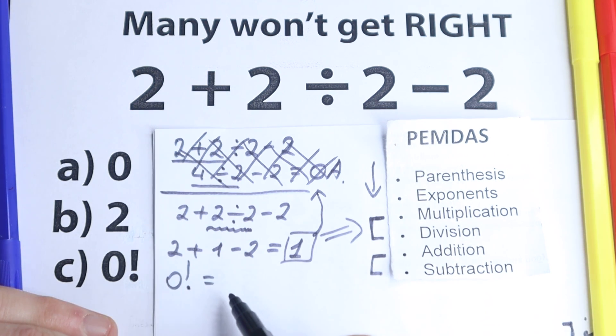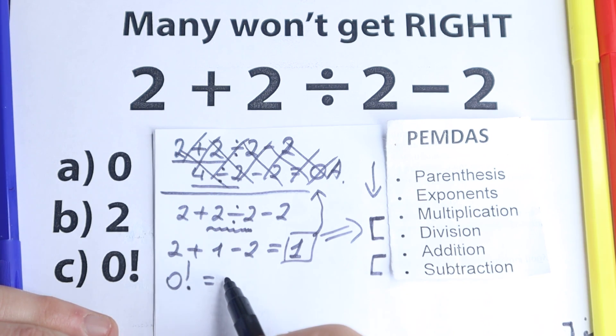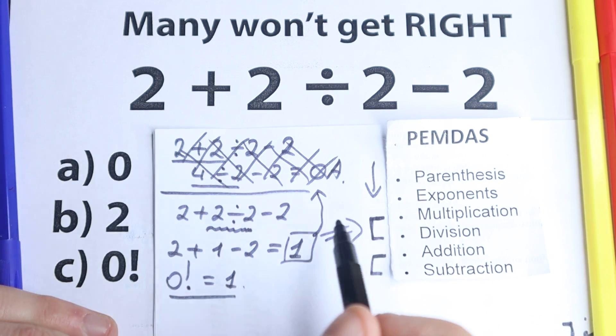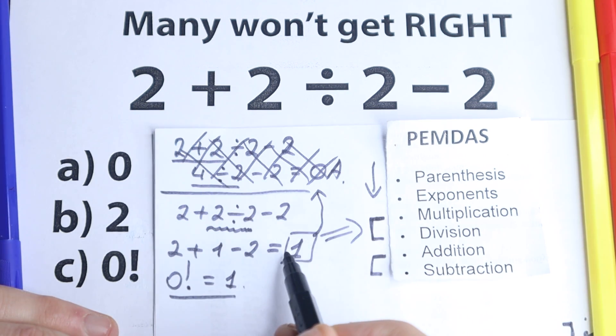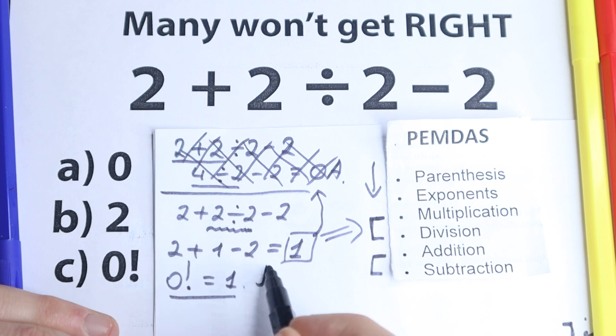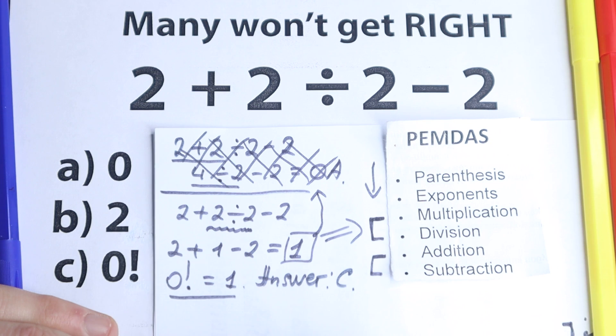But what about this 0 factorial? This is our last hope right here. Because 0 factorial, we need to know from school, that 0 factorial equal to 1. This is a special case right here. And if you're talking about the solution to this expression, this is 1. If you're talking about our test, our correct answer is option C, 0 factorial.